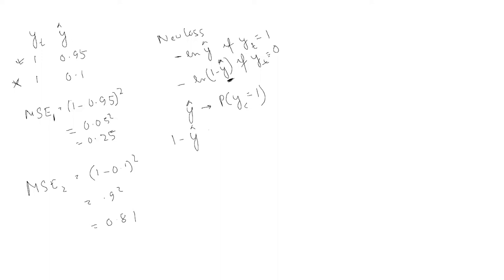So for whichever class the example belongs to, you take the log of the probability of belonging to that correct class. If the target class is 1, take the log of the probability of class 1. If the target class is 0, take the log of 1 minus y_hat, which is the probability of class 0. This is the Negative Log Loss, or NLL.